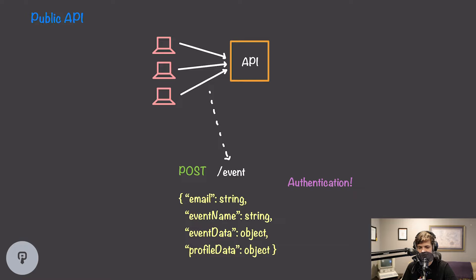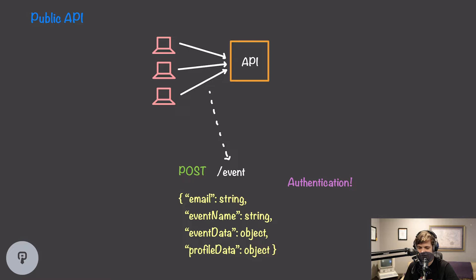Let's dive into the public API. Our public API is what end users use to track events and information associated with them. It needs to be publicly accessible from users' web browsers. We can make this API very simple — all we need is one POST request to log an event. That request includes the email of the user as our identifier, the name of the event we're logging, and any data associated with that event. Every event is associated with a particular email address, has a specific name, and we allow customers to add any other data they want.